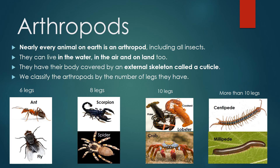Arthropods. Nearly every animal on Earth is an arthropod, including all insects. They can live in the water, in the air, and on land too. They have their body covered by an external skeleton called a cuticle. We classify the arthropods by the number of legs they have: six legs, like ants and flies; eight legs, like scorpions and spiders; ten legs, like lobsters and crabs; and more than ten legs, like centipedes or millipedes.